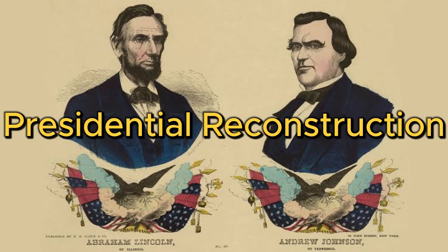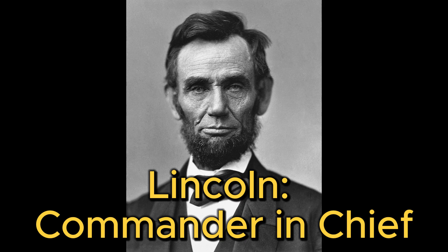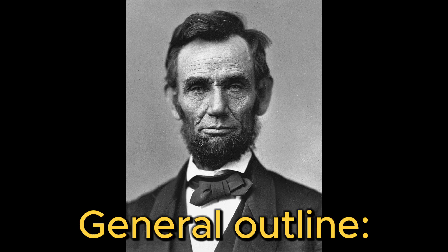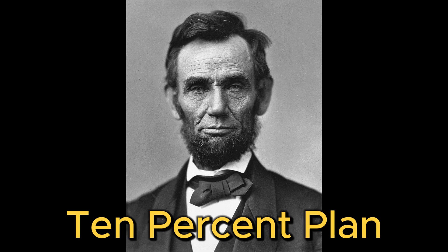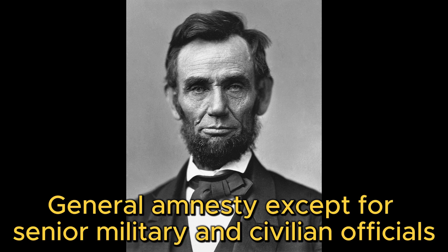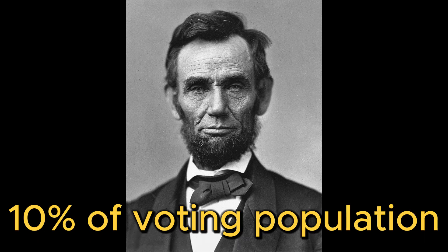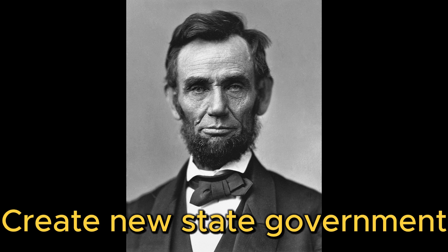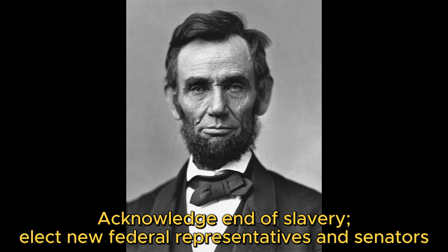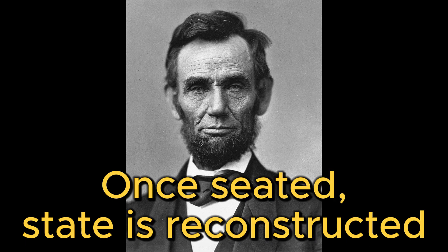The first stage would be Presidential Reconstruction. Lincoln thought that since he was putting down a rebellion and was commander-in-chief of the military that was fighting it, he would be in charge of the post-war peace. In 1863, Lincoln had prepared a general outline of what he thought readmitting a state would look like — historians call it the 10% plan. Nearly every Southerner, except for senior military officers and civilian officials, would receive amnesty on the condition that they swore allegiance to the United States. Once 10% of the number of people who voted in the 1860 election did so, they would be allowed to create a new state government. The new government would have to acknowledge the end of slavery and elect new federal representatives and senators. Once they were seated, the state would be reconstructed.